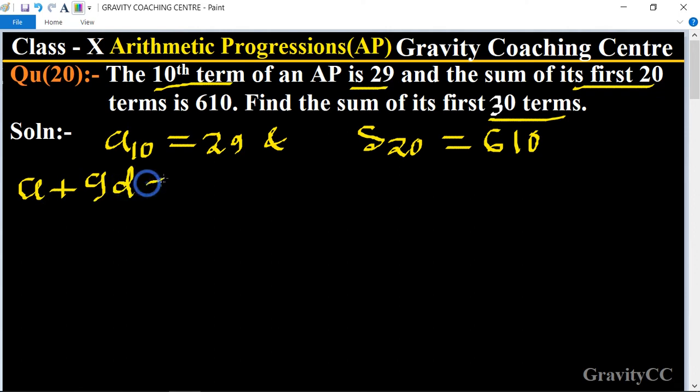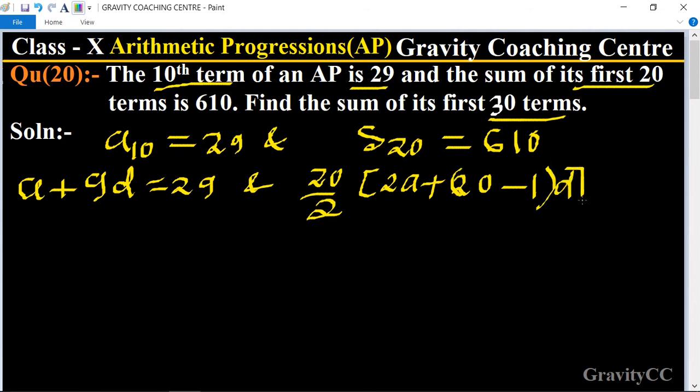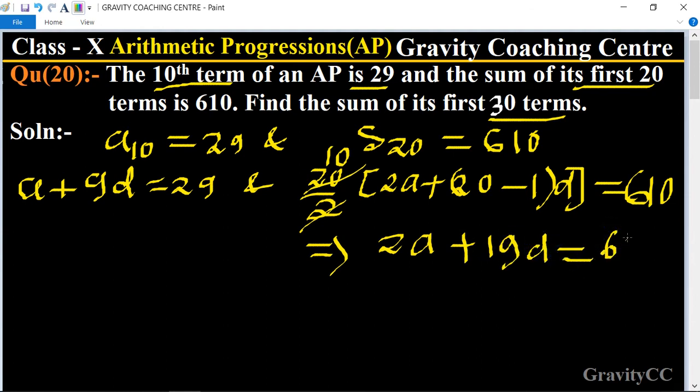And S₂₀ = (20/2)[2a + (20-1)d] = 610. Cancel by 10, so this implies that 2a + 19d = 610 upon 10.